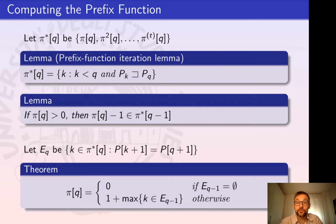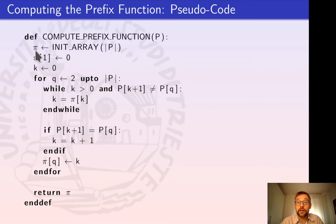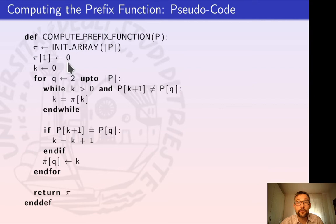Let's look at the code to compute the prefix function for the pattern P. First we initialize the array pi with the same size as the pattern. The first element of the pi array is set to zero, because the proper prefix of P[1] — which contains exclusively one character — would be the empty string, so we place zero, meaning the length of the proper prefix of P[1] is zero.